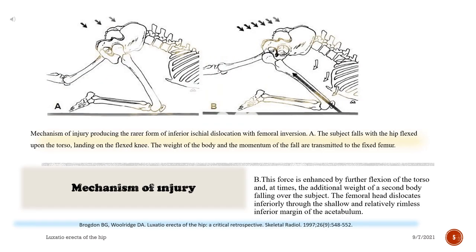The mechanism producing the rarer form of inferior ischial dislocation with femoral inversion: the subject falls with the hip flexed upon the torso, landing on the flexed knee. The weight of the body and the momentum of the fall is transmitted to the fixed femur.